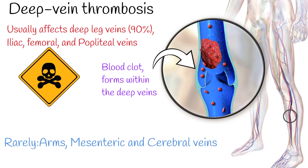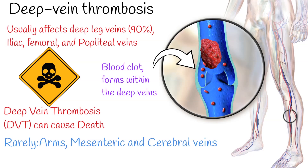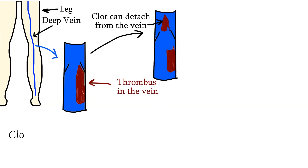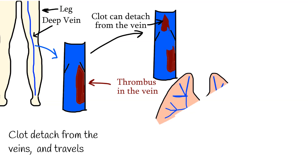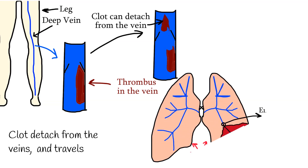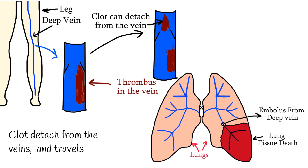Deep vein thrombosis is a common and important disease because it causes death. A clot can detach from the veins and travel as an embolus through the right side of the heart, eventually lodging in a pulmonary artery that supplies blood to the lungs. This is called a pulmonary embolism.